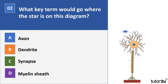Question two. What key term would go where the star is on this diagram? There's a little blue star, and I'd like to know — out of A, B, C and D — which term you think would be used to label that particular part of a neuron. Pause your video.